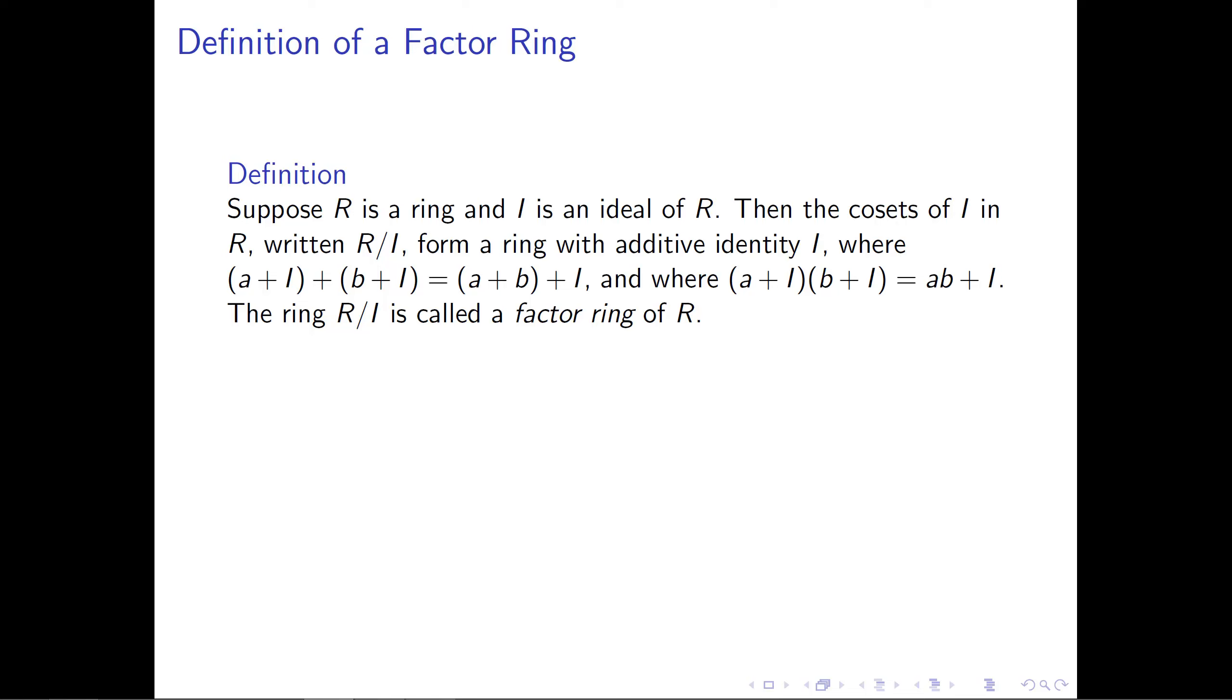If R is a ring and I is an ideal of R, then the cosets of I in R, written R mod I, happen to form a ring with additive identity I.